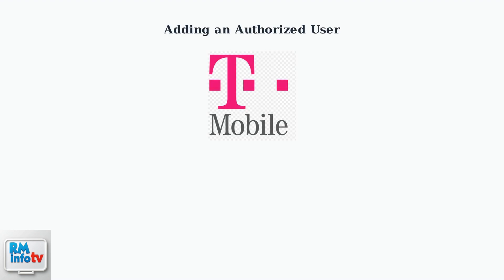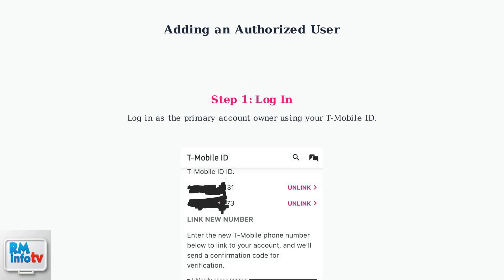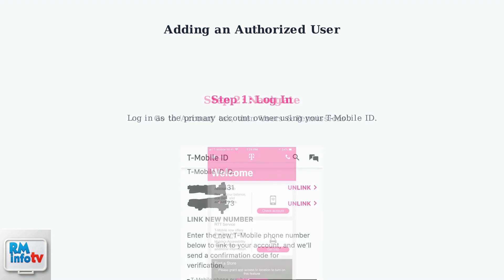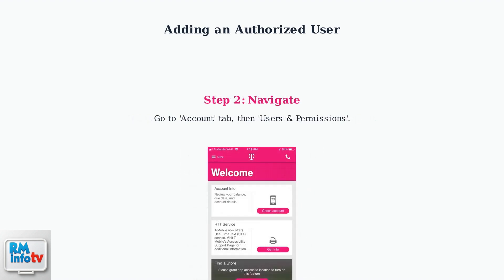To add an authorized user on the T-Mobile app, log in as the primary account owner using your T-Mobile ID. Navigate to the account tab, then find Users and Permissions. Select Add Authorized User and enter the user's full name, email, and optionally their phone number.